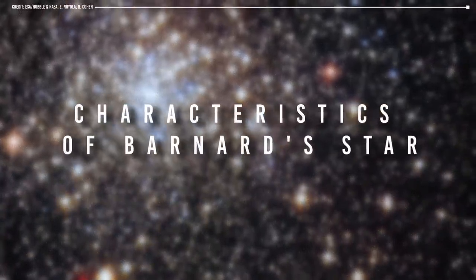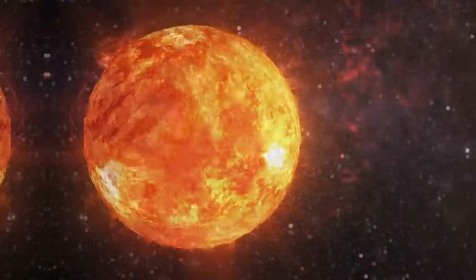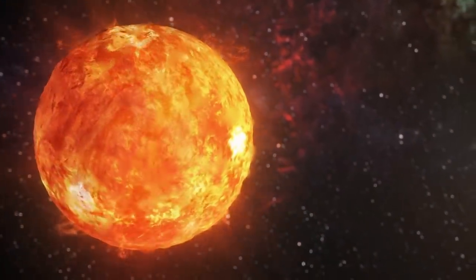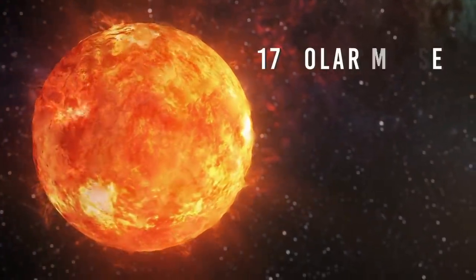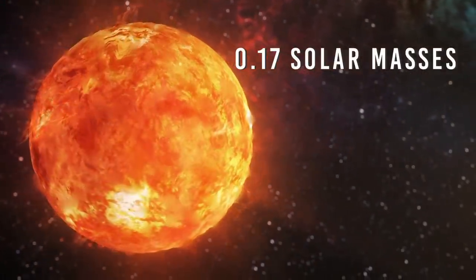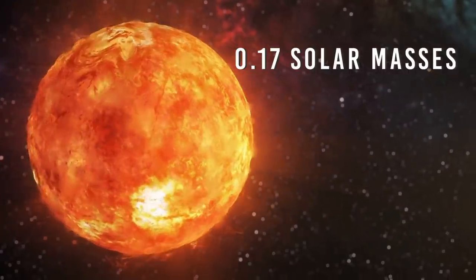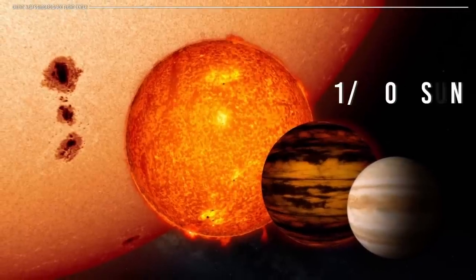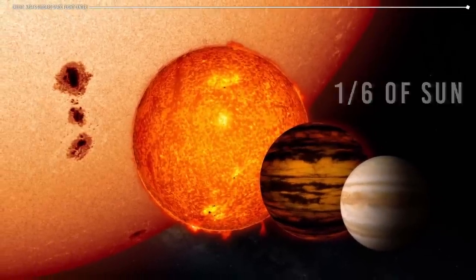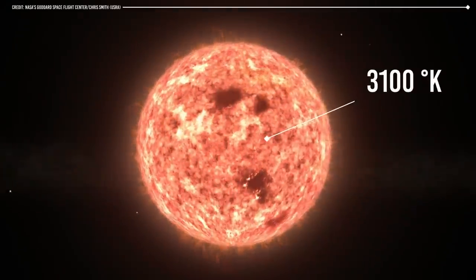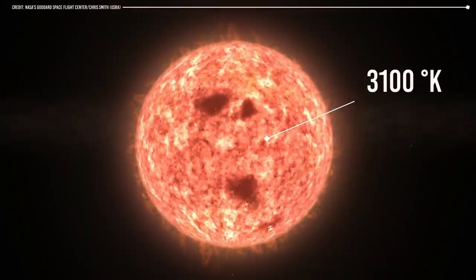Barnard's star is a relatively small star with a mass of about 0.17 solar masses and a radius of approximately 0.2 solar radii. It is about one-sixth the size of our Sun, and its surface temperature is around 3100 Kelvin, which makes it much cooler than the Sun.